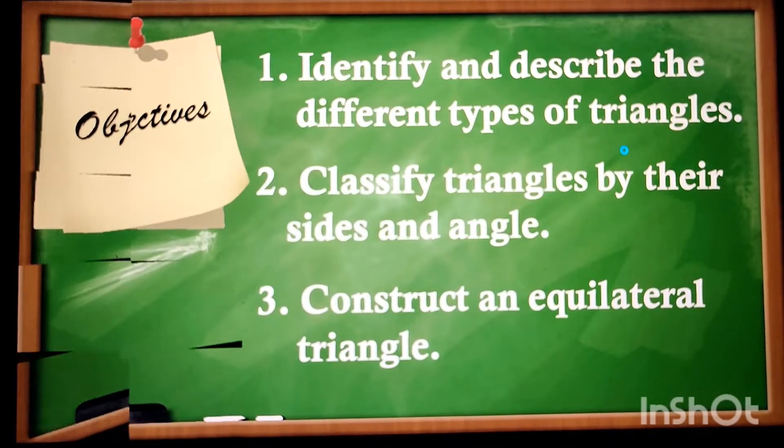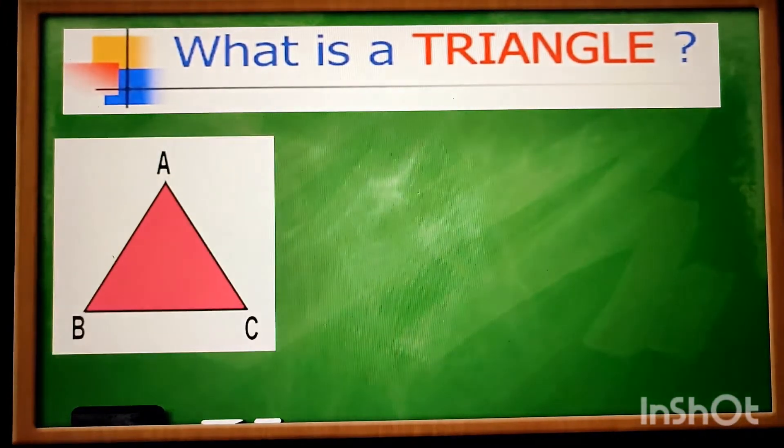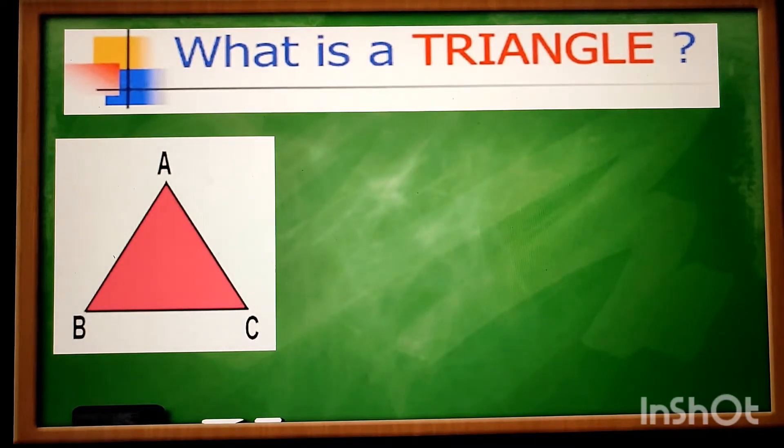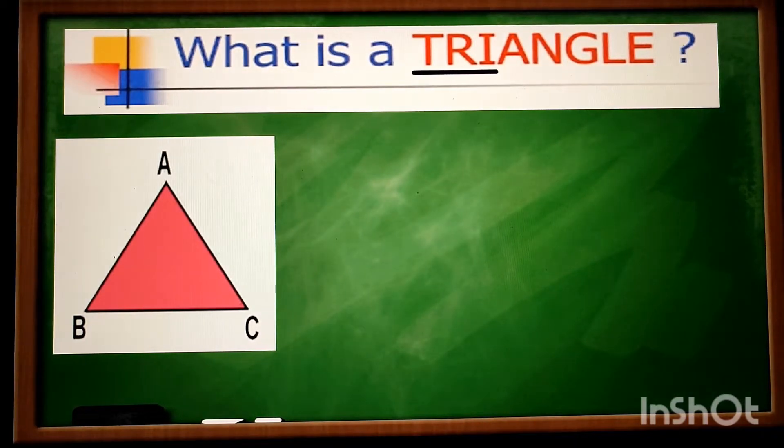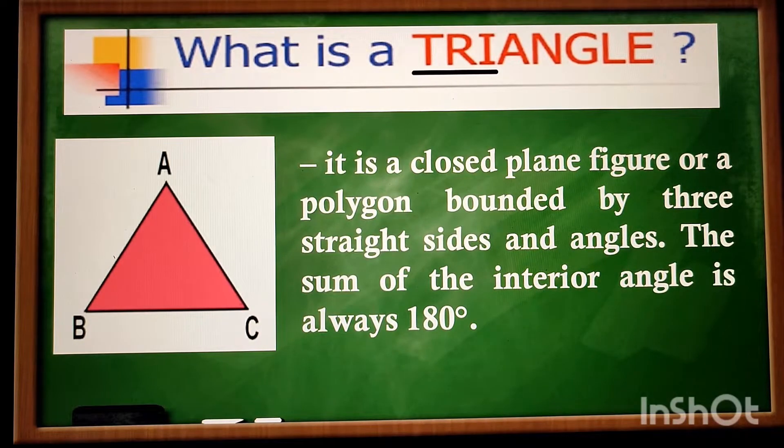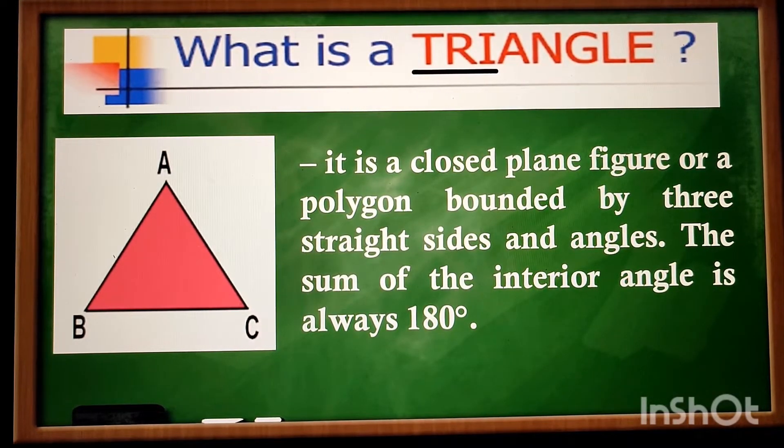Let us define first triangle. When we hear tri, it means three, three angles. Triangle is a closed plane figure or a polygon bounded by three straight sides and angles, and the sum of the interior angles is always 180 degrees.